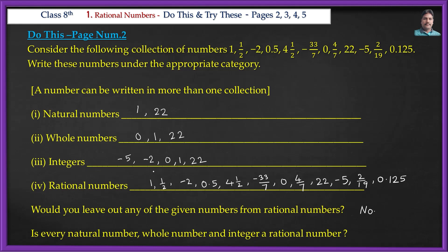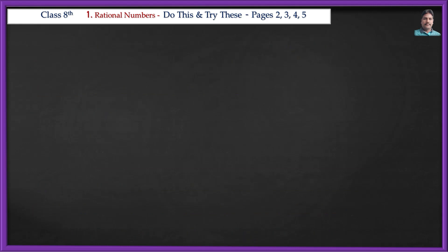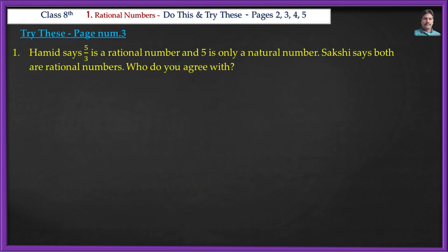Is every natural number, whole number, and integer a rational number? The answer is yes. Next question — Try these: Hamid says 5/3 is a rational number and 5 is only a natural number. Sakshi says both are rational numbers. Who do you agree with? I agree with Sakshi.